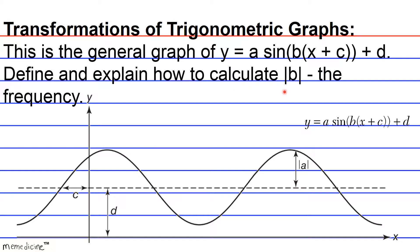Alright, so the absolute value of b, the frequency, is the number of complete cycles. Let's take that over the interval from 0 to 2π radians, or you could say 0 to 360 degrees.